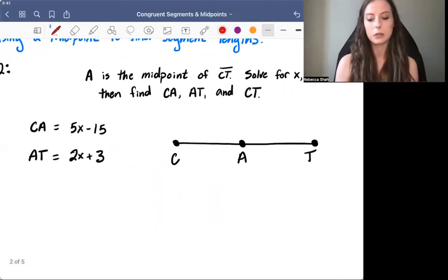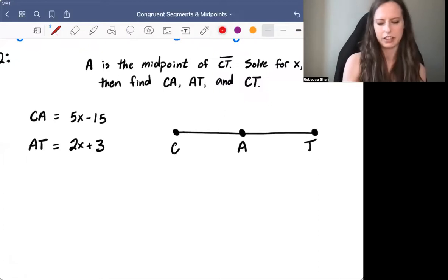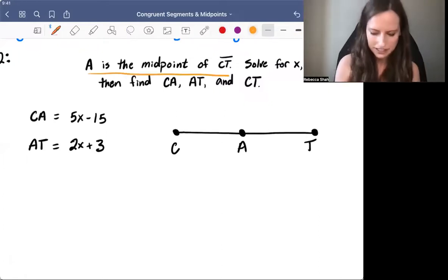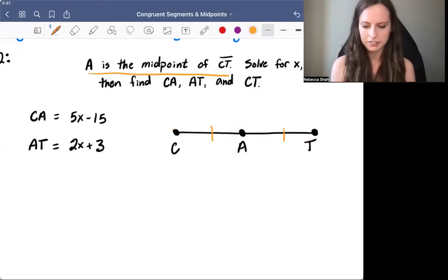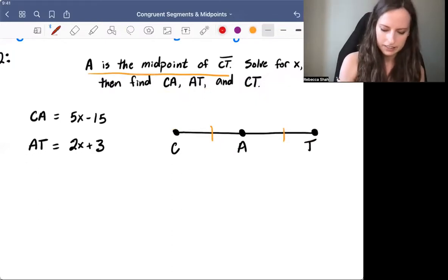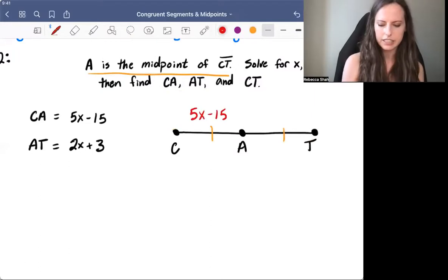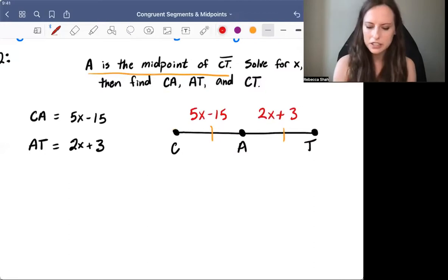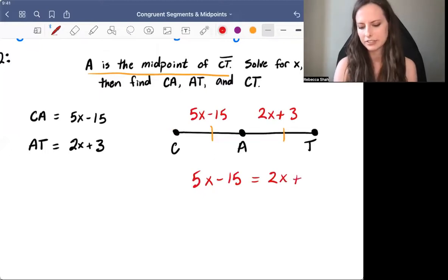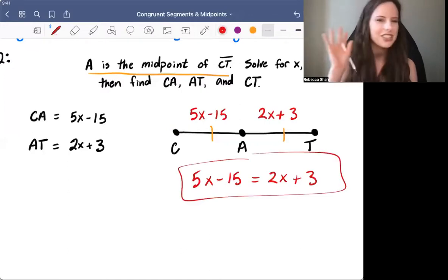Another example using the word midpoint. Let's just read this first. A is the midpoint of CT. Well, that means that it's perfectly in the middle and it cuts CT into two congruent segments. We have to solve for X and then find the measures of all the segments. We've got segment CA, which is 5X minus 15, and segment AT. Those two segments are congruent, which means that we can set them equal to each other. So we have 5X minus 15 equals 2X plus 3. Just setting up that equation is half the battle.